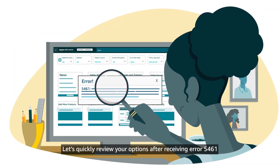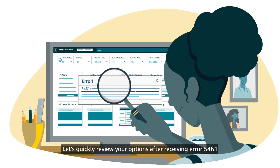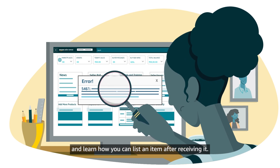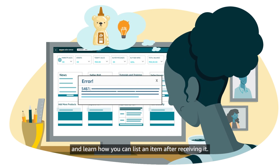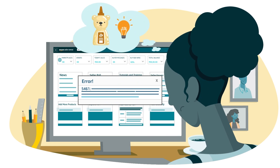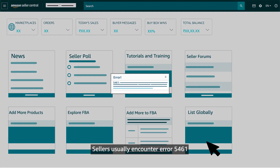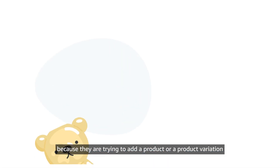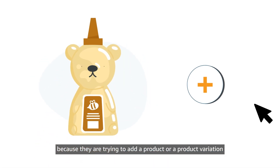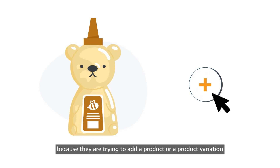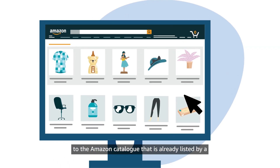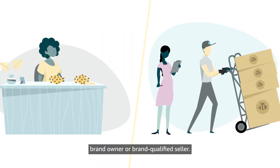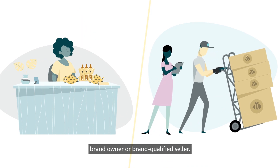Let's quickly review your options after receiving Error 5461 and learn how you can list an item after receiving it. Sellers usually encounter Error 5461 because they are trying to add a product or a product variation to the Amazon catalog that is already listed by a brand owner or a brand-qualified seller.